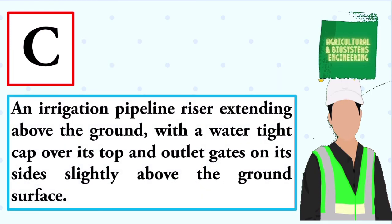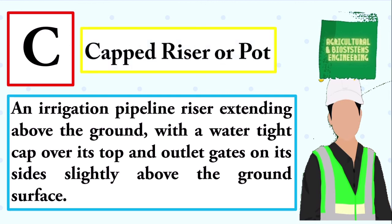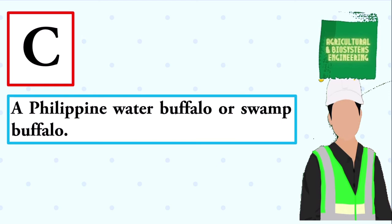An irrigation pipeline riser extending above the ground with a watertight cap over its top and outlet gates on its sides slightly above the ground surface. The answer is capped riser or pot.